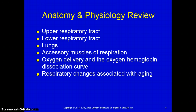Your lungs are protected by your ribcage and are also enclosed by the pleura. There are also the accessory muscles of respiration. The oxygen delivery and the oxygen-hemoglobin dissociative curve is something we'll be talking about, as well as respiratory changes associated with aging — looking at both the child and the adult.